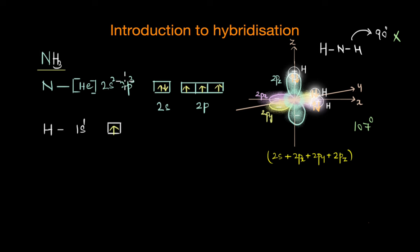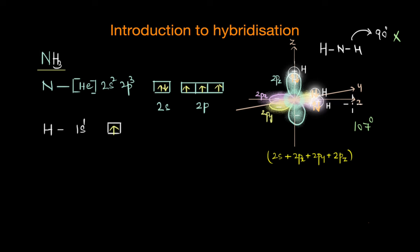But the problem is that in reality the bond angle of ammonia is around 107 degrees and not 90 degrees. If you extend this orbital overlap concept to other molecules like methane or water, you will find that VB theory cannot accurately predict the geometry of these molecules. The experimentally obtained bond angle is not the same as what we would get using the orbital overlap concept. So clearly you can see how the simple orbital overlap model of VB theory is grossly insufficient, and that is when Linus Pauling and others introduced the concept of hybridization.